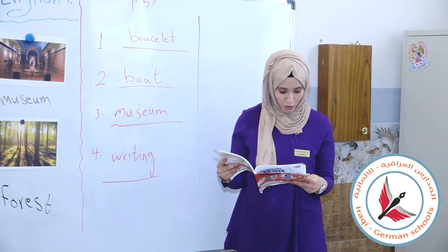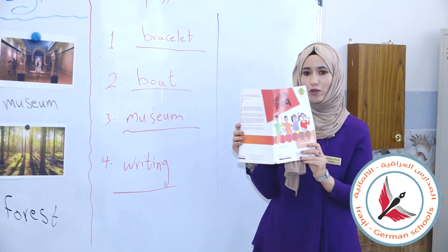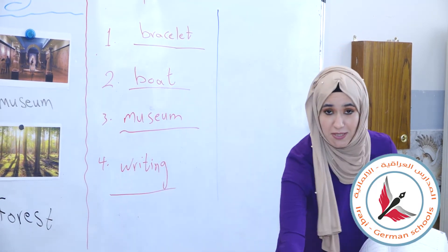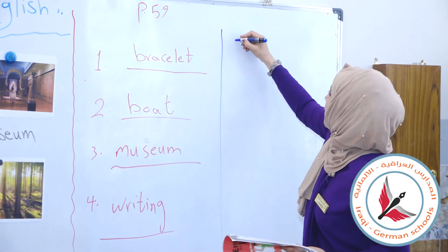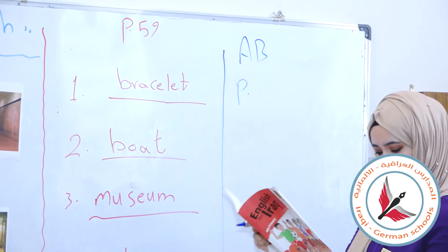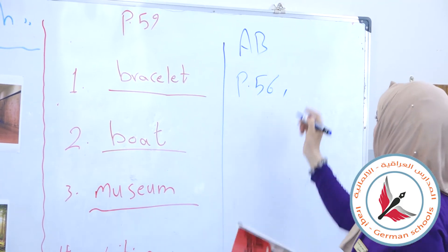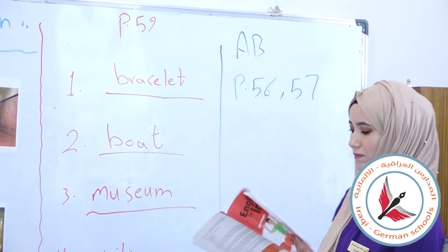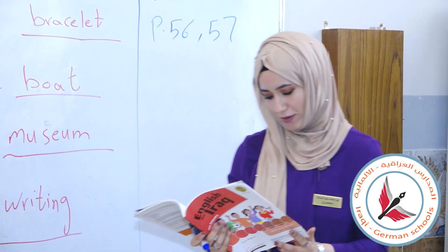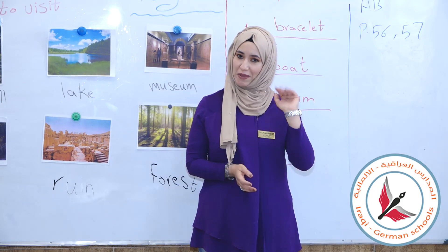Now open your activity book on page 56 and 57 — this is your homework. Pages 56 and 57 from your activity book. We've finished our lesson. Thank you for watching, bye bye.